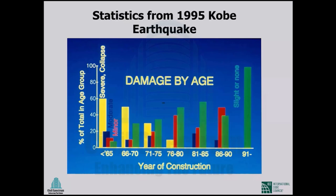The oldest structures, built before 1965, had about 60% suffering severe damage or collapse, with less than 10% showing no damage at all. Moving to newer structures from 1966–1970, the proportion of severe damage decreased and the percentage of no damage increased. The trend continues: structures built between 1981 and 1985 show virtually no collapse. By structures built after 1991, there is no damage whatsoever — everything was fine after the earthquake.